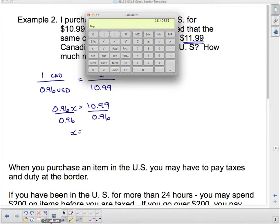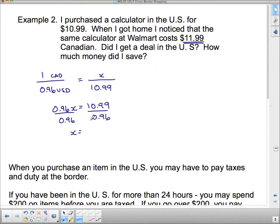And we get, pull up my calculator, 10.99 divided by 0.96 is 11.45. If I round to there, 7 rounds that 4 up. So, $11.45. So, it does look like I got a deal. It was $11.99 here. Notice it says, how much did I save? Well, $11.99 minus $11.45. That is going to be $0.54.